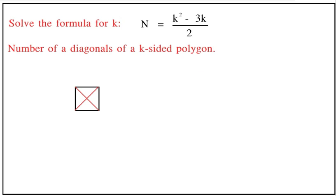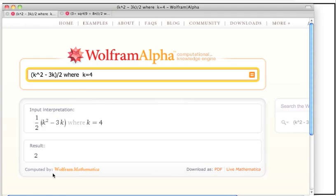What I've done here is I've gone to Wolfram Alpha. As you can see, here is the top of the fraction, and I had to use parentheses to demark it. Here is the syntax I used to tell Wolfram Alpha to evaluate that expression when k equals four, four-sided square. As you can see, the result was two, and there are in fact two diagonals.